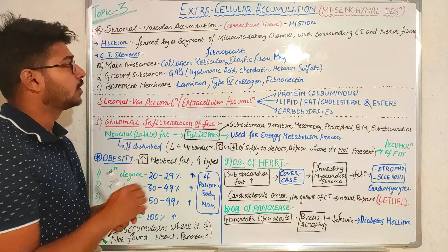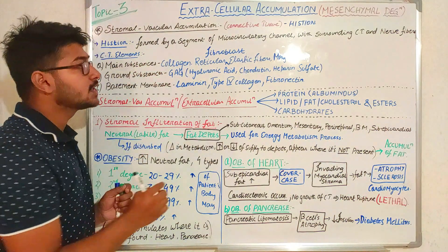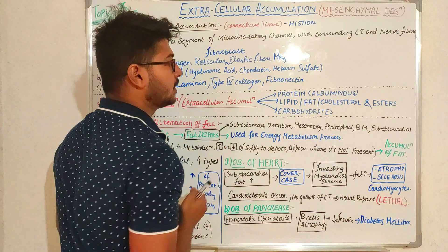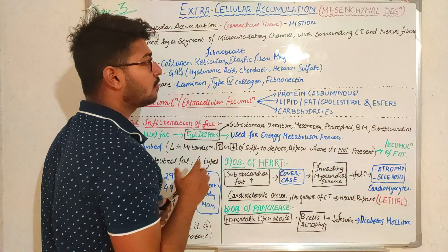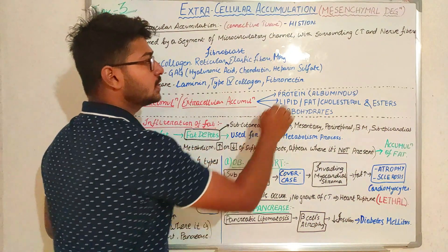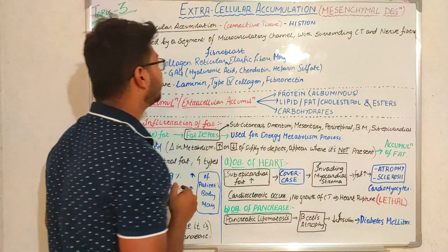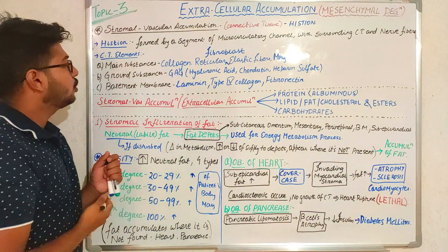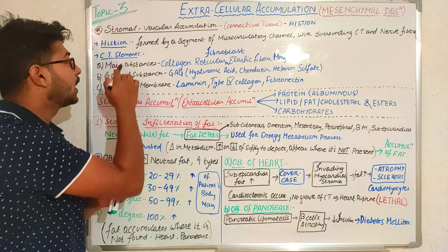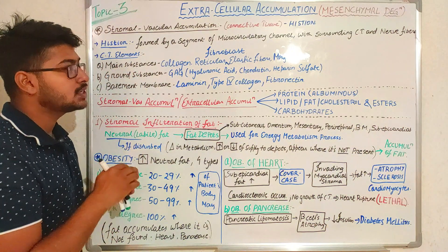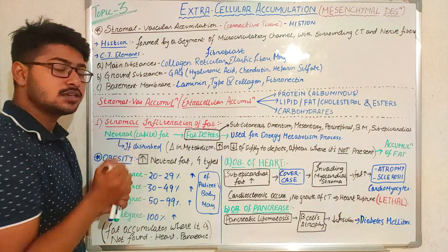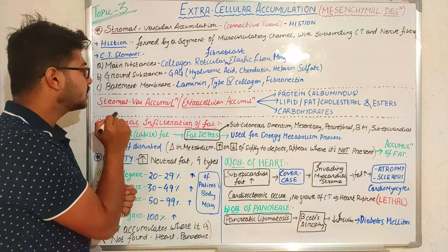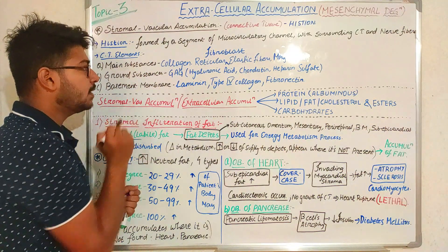What do we mean by histion? Histion is formed by a segment of micro-circulatory channels comprising nerves, artery vessels with surrounding connective tissues. If this histion is present, the connective tissue elements around it consist of the main substances, the ground substances, and finally the basement membrane.